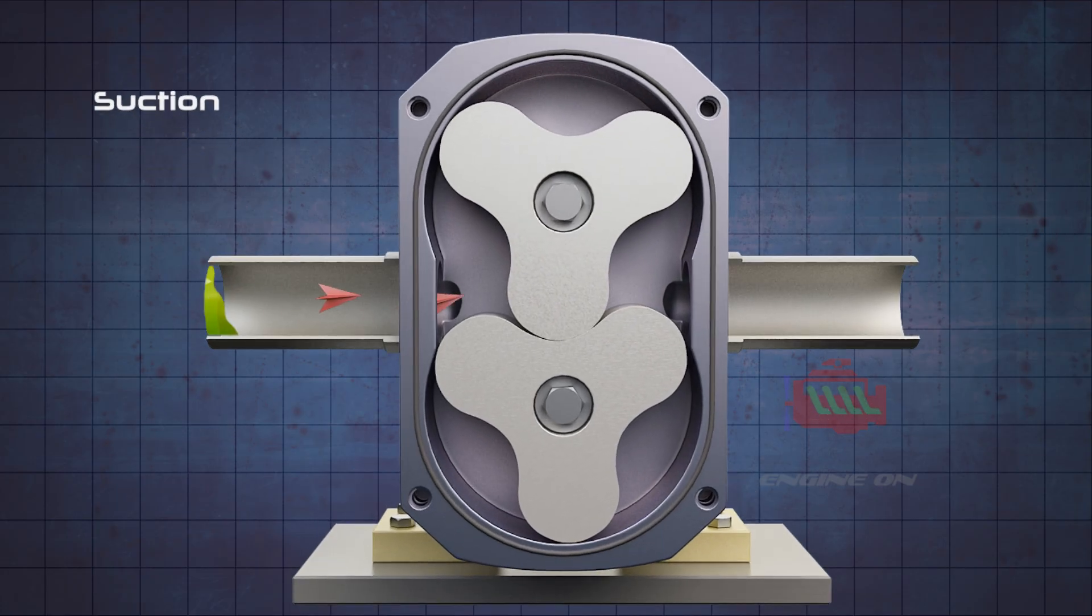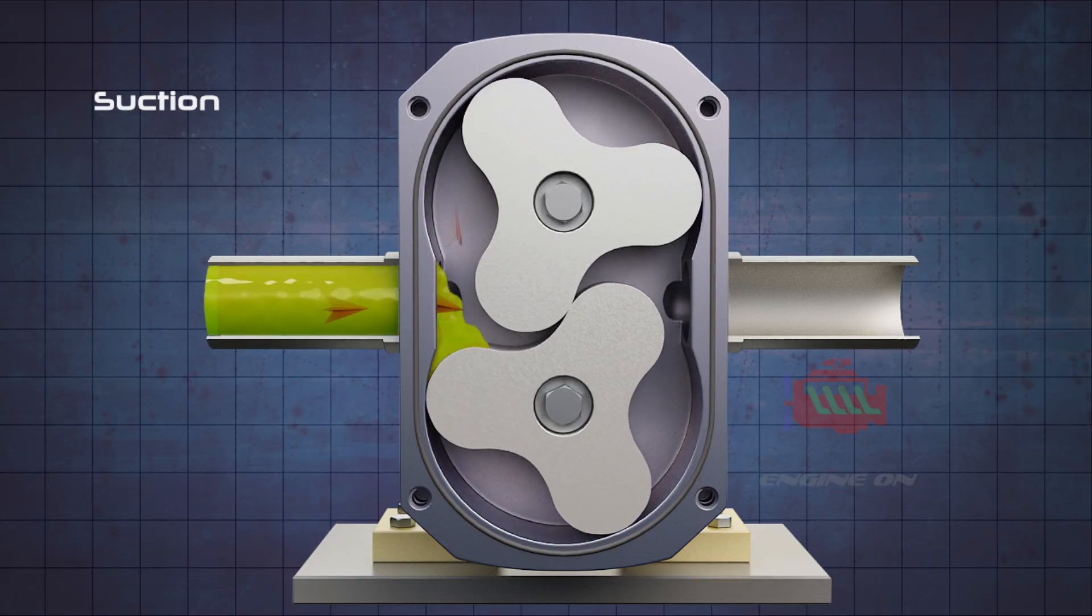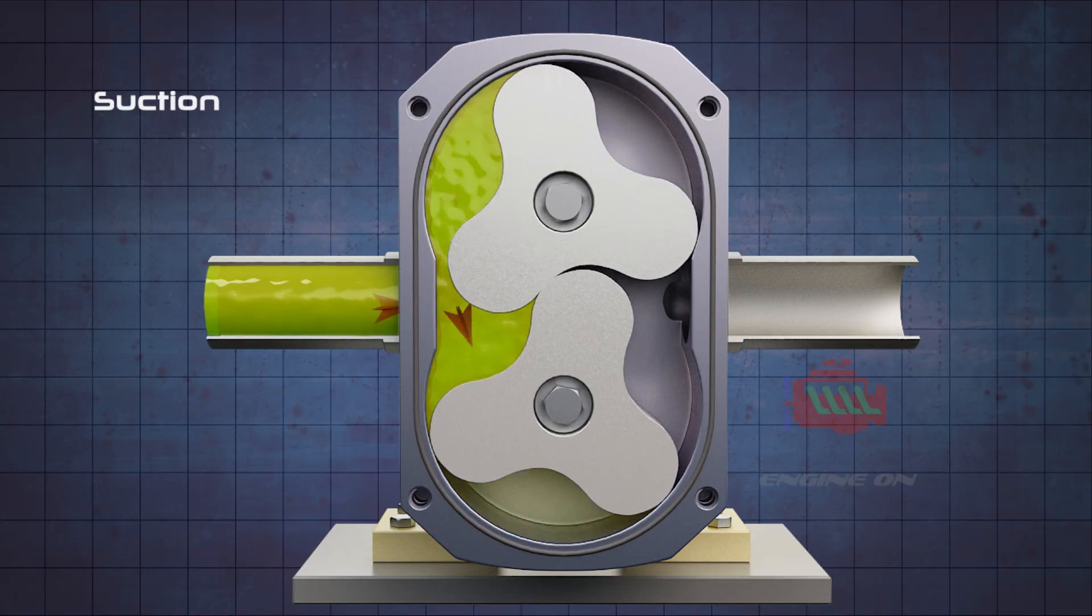Suction: As the lobes rotate away from each other on the inlet side, they create an expanding volume and a vacuum.